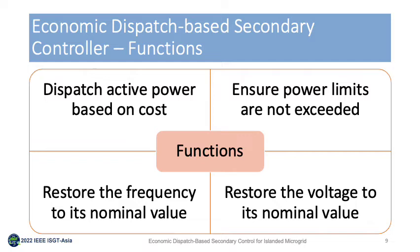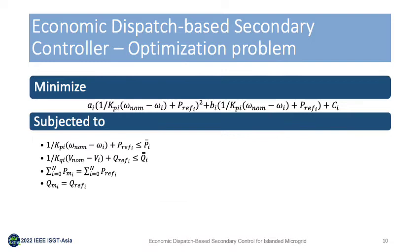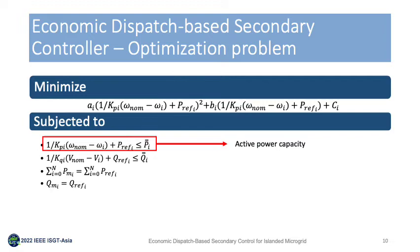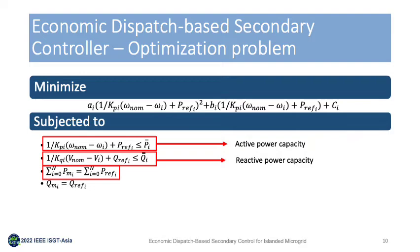The economic dispatch based secondary controller provides the following functions: dispatching active power based on cost, ensuring power ratings are not exceeded, and restoring frequency and voltage to their nominal values. The optimization function minimizes the cost of generation subject to technical constraints, including active and reactive power capacity constraints. The frequency restoration constraints are chosen such that, due to the global nature of frequency measurement, power balance and frequency restoration are both satisfied, with the summation allowing active power dispatch based on cost.